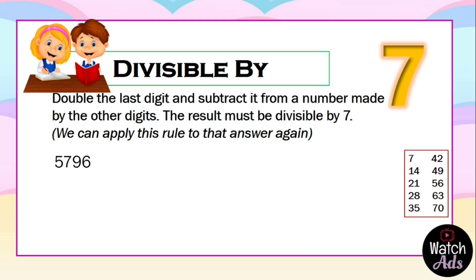We check the last digit that is 6. And then we double it, which gives us 12. Subtract 12 from 579. The answer is 567.